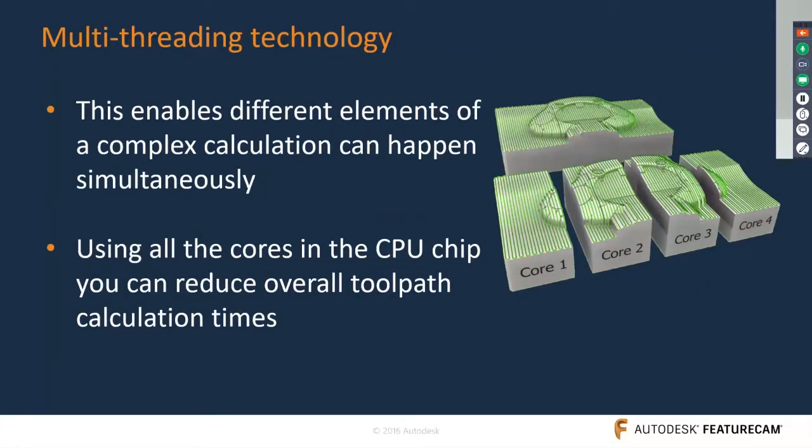Apart from that, you can get multi-threading technology, which is widely known for making program calculations faster inside the software. You can use your multi-core CPU chip to do faster programming and faster toolpath calculation.